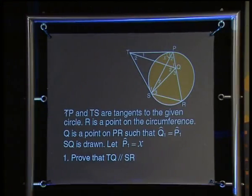John has prepared another problem for us to follow. Let's go back to him now. In the figure, TP and TS are tangents to the given circle. R is a point on the circumference, and Q is a point on PR such that Q1 equals P1. SQ is drawn, let P1 equal x.